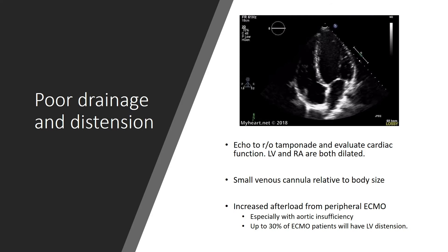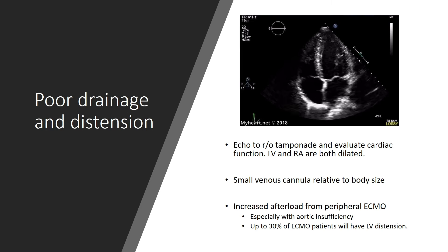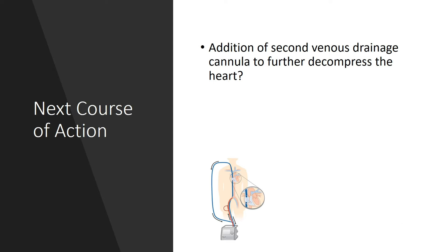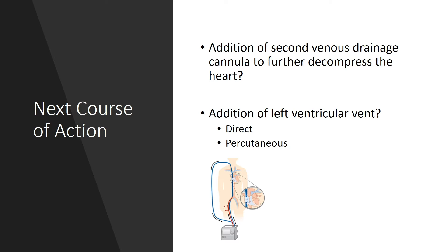Truby et al. in 2017 reported that approximately 30% of adult VA ECMO patients had evidence of LV distension. A possible course of action for these patients would be to decompress the LV in some fashion. The solution may be to place another venous cannula in the patient's right internal jugular vein and connect it into the venous side of the ECMO circuit. This would help to decrease the amount of native blood flow returning to the right atrium by increasing drainage from the venous vascular system, ultimately increasing blood flow through the ECMO circuit in a veno-veno arterial fashion.